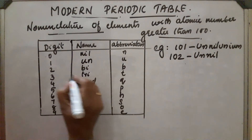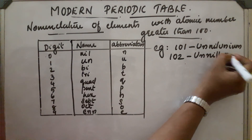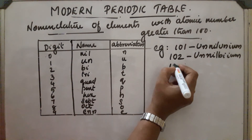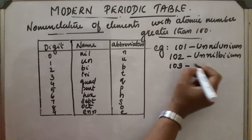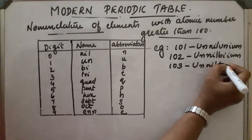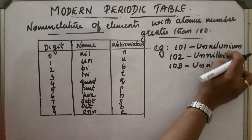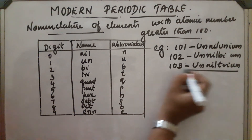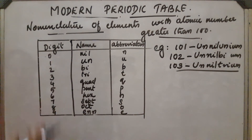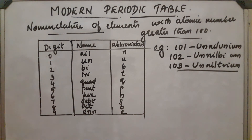For example, 2 is 'bi', so element 102 uses 'bi', 'nil', 'bi' — 'binilbium'. Like this, we can write the name of different elements by using the numerical root for each digit, linking these roots, and adding 'ium' at the end.